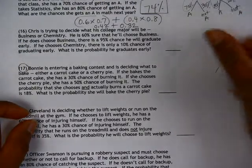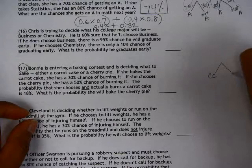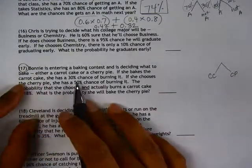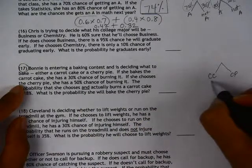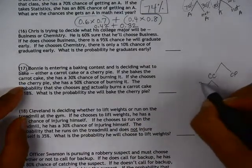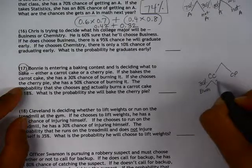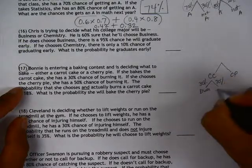I'm going to start my tree diagram here with that decision, carrot cake versus cherry pie. If she bakes the carrot cake, she has a 30% chance of burning it. So over here we have 30% chance that she will burn it, which means there's a 70% chance that she will not burn.